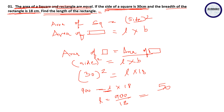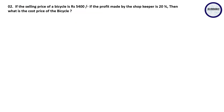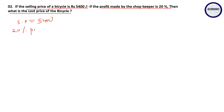The second question: if the selling price of a bicycle is 5400 rupees and the profit made by the shopkeeper is 20 percent on each product, what is the cost price of the bicycle? We have selling price 5400, 20 percent profit, and we need to find the actual cost price.